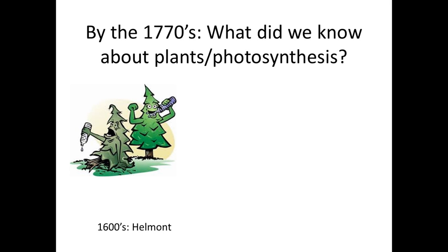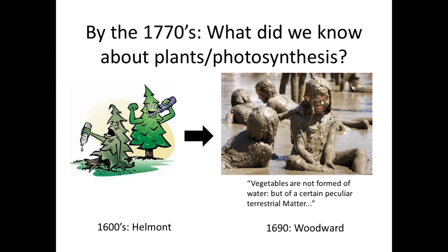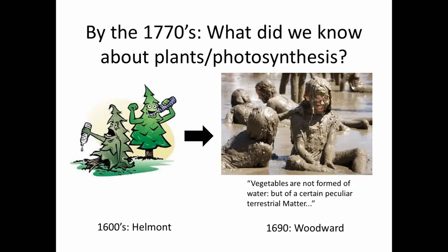Not long after, there was a Brit by the name of Woodward in 1690. He grew plants in different kinds of water and soil and found that plants in soil did much better than if you grew them just in water. Basically he concluded that vegetables are not formed of water but of a certain peculiar terrestrial matter — something else is letting these plants grow.